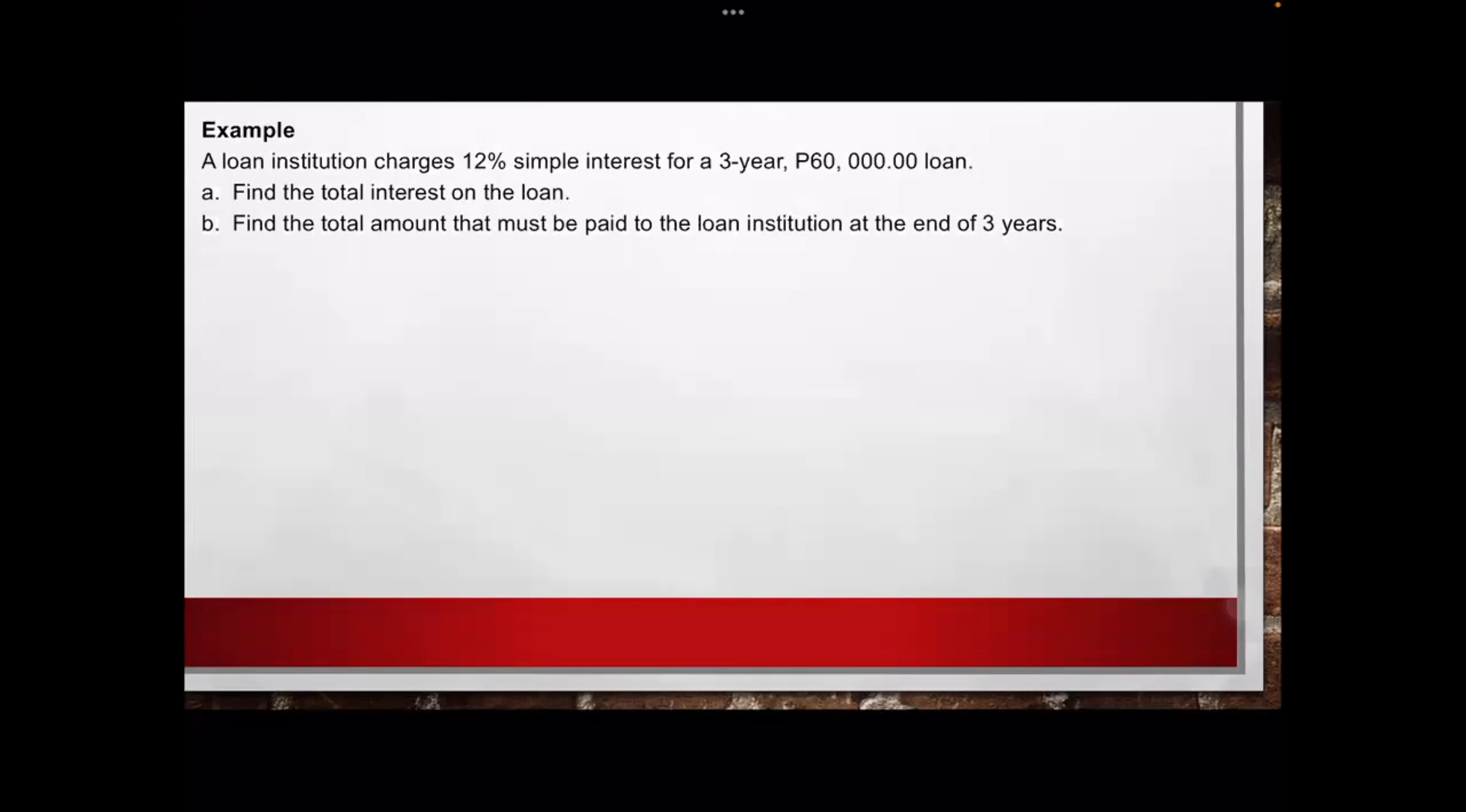Example: A loan institution charged 12 percent simple interest for a three-year 60,000 peso loan. Letter A: Find the total interest on the loan. Letter B: Find the total amount that must be paid to the loan institution at the end of three years. So let's identify the given. We have 12 percent, that will be the R, so 12 percent taken as 0.12. Then 60,000, this will be the principal.